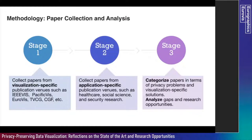Our methodology was a three-stage process. We first collected papers from visualization-specific venues and also from different application-specific venues like healthcare, social science, and security research. We ended up with around 400 papers in total — all in the supplemental material — but then we did some filtering, focusing only on papers that provided visualization as a solution to the privacy preservation problem, not just those that mentioned the word 'visualization' in one or two sentences. The third stage involved categorization of papers in terms of problems and solutions, and ultimately analysis of gaps and research opportunities.